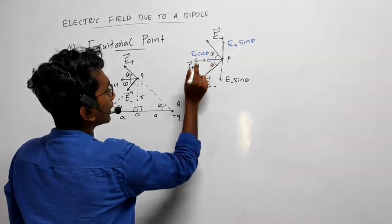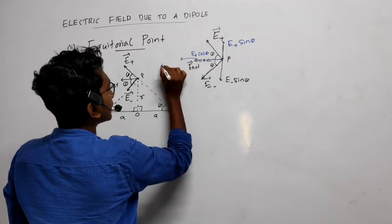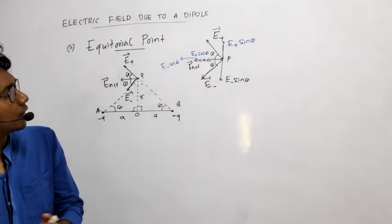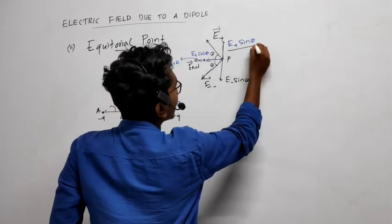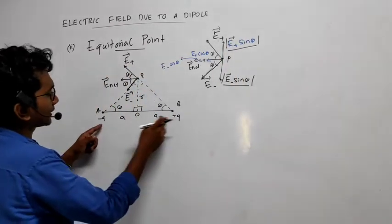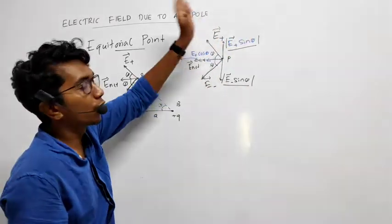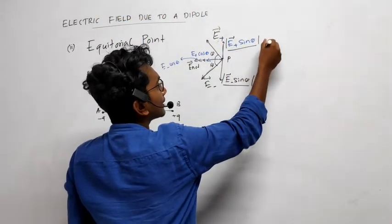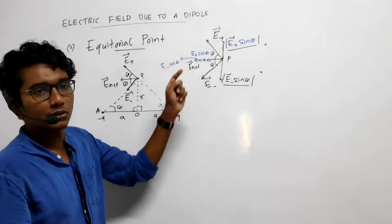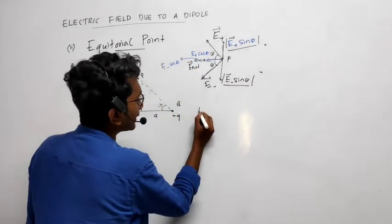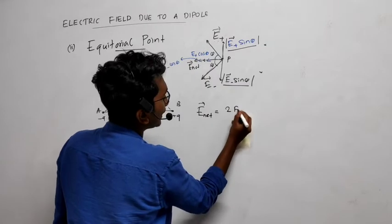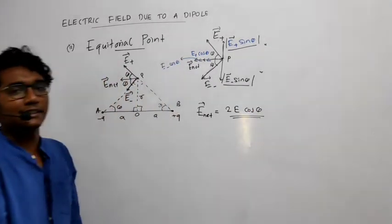The magnitude of E plus sine theta and E minus sine theta are equal, but their directions are opposite to each other, so they cancel each other. What remains is E plus cos theta and E minus cos theta, which are both in the same direction. So the net electric field will be: E_net = 2E cos θ.